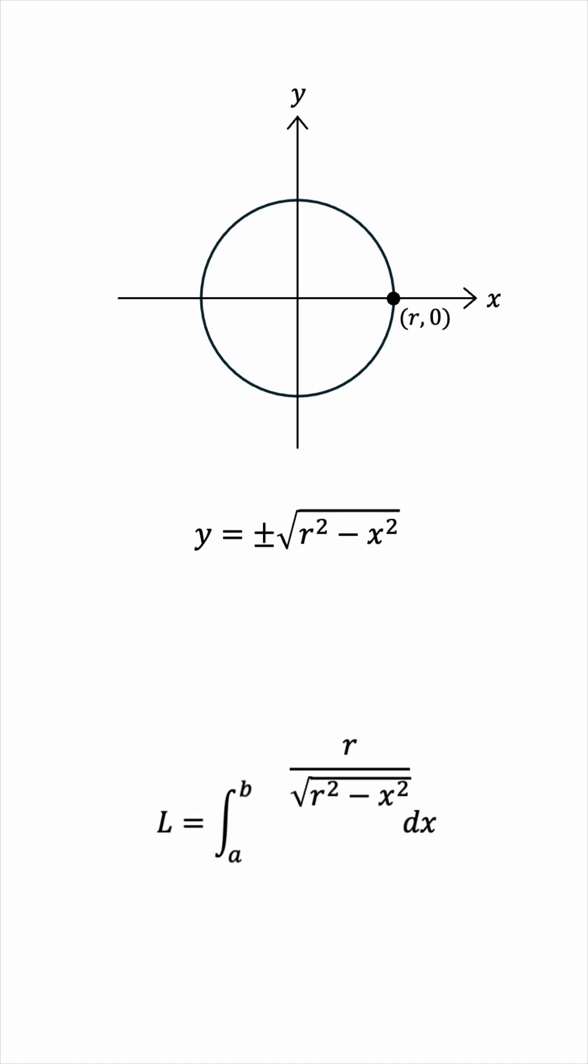So, we'll integrate r over the square root of r squared minus x squared. But we still haven't figured out the bounds, a and b.